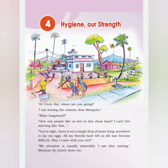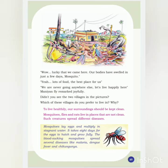This is the conversation between rat, mosquito, and fly living in a very neat and clean place. Now we will check what they say when they reach a dirty place. 'Wow, lucky that we came here — our bodies have swelled in just a few days!' 'Mosquito: yeah, lots of food, the best place for us, we are never going anywhere else, let's live happily here!' When they reach this dirty place, they get enough food because there is a lot of waste. These animals — mosquito, rat, and fly — get lots of food for their survival.